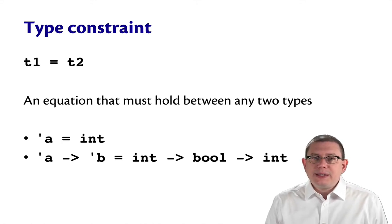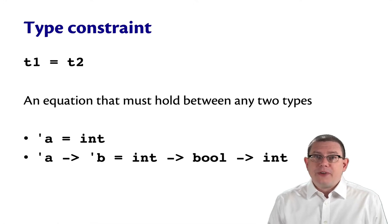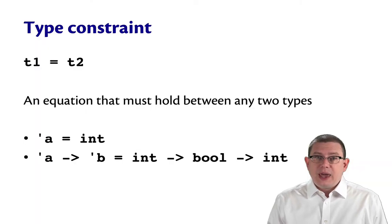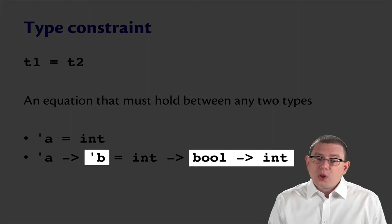If we look at the pieces of it, we might be able to infer something further about the type variables involved. We know, of course, that function types associate to the right. So here, alpha must be equal to int, and beta must be equal to bool arrow int.